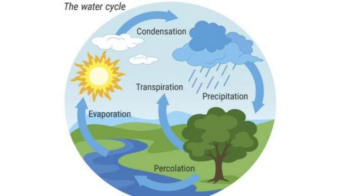As a result of the process of continuous condensation that goes on in the atmosphere, the condensed water particles slowly grow in size by the addition of smaller particles of water droplets with one another. And when the resistance of the air fails to hold them in the atmosphere against the force of gravity, it falls onto the Earth's surface.